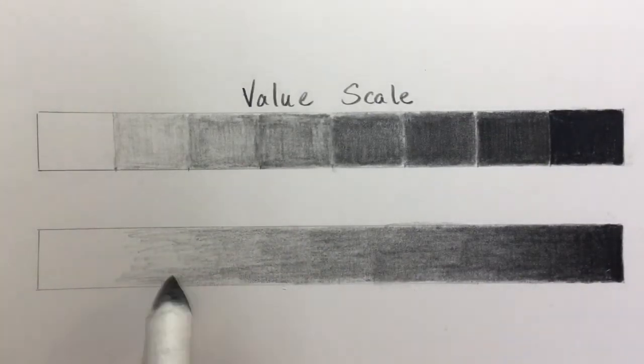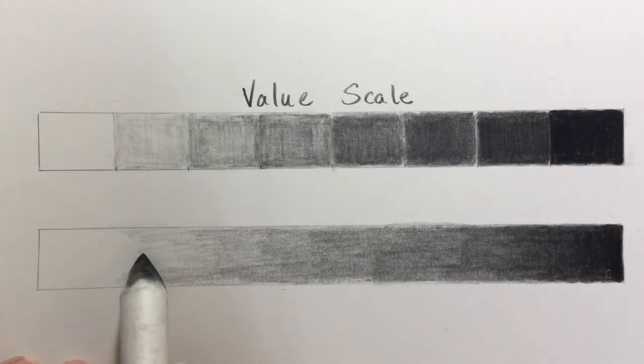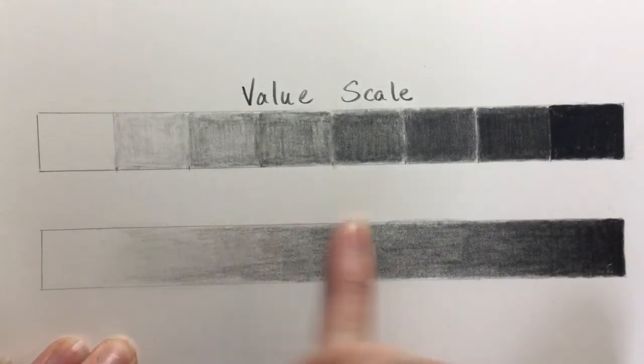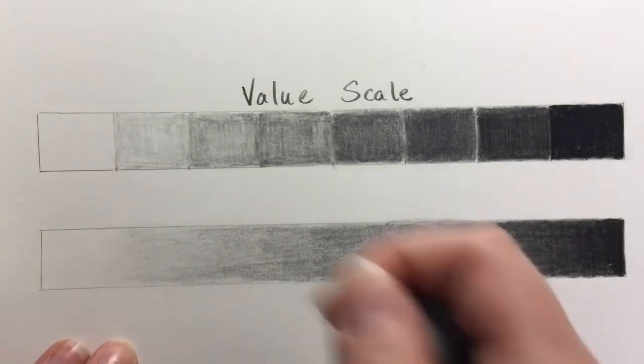I like to use a blending stump to make the pencil strokes less noticeable. When getting to the really light areas, I prefer to use one of my fingers to blend it even more.